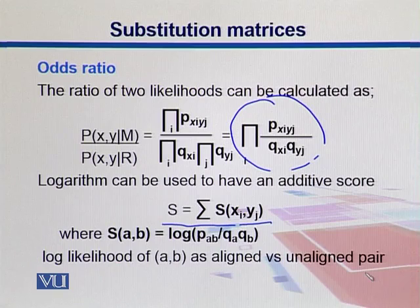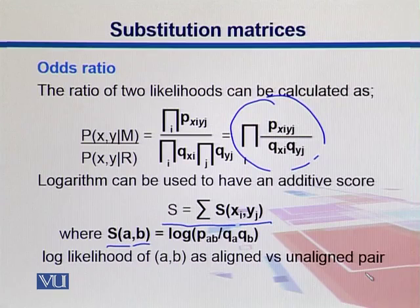So we have S, which is the sum of s(xi, yj), where the score of A and B is the log of PAB divided by QA times QB — the same log likelihood of AB as an aligned versus unaligned pair, which is the log-odds ratio.